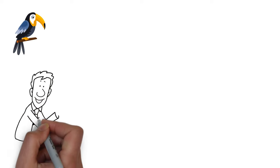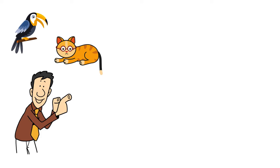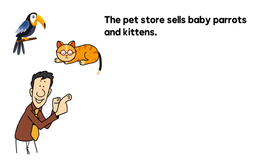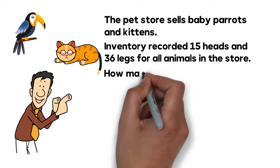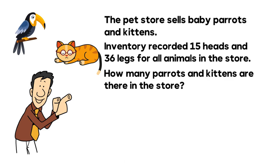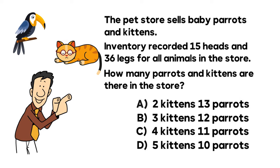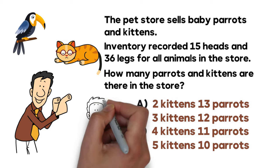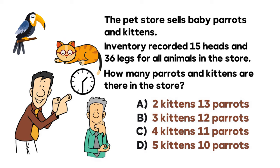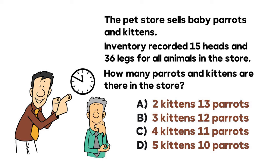Here's an excellent question frequently seen on the test. A pet store records 15 heads and 36 legs for baby parrots and kittens. How many parrots and kittens are there? Choices: A: 2 kittens/13 parrots, B: 3 kittens/12 parrots, C: 4 kittens/11 parrots, D: 5 kittens/10 parrots. Give yourself 10 to 30 seconds.